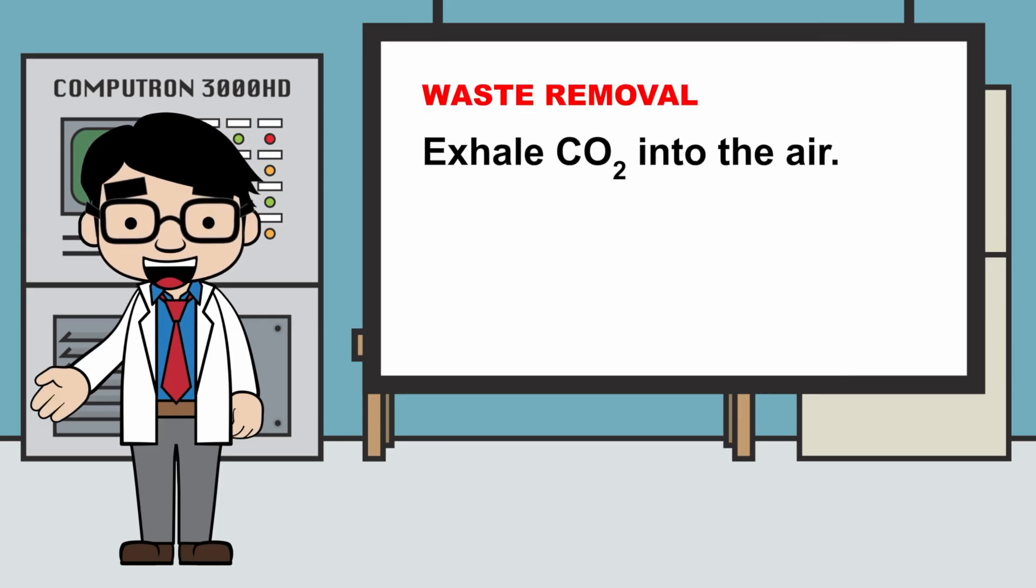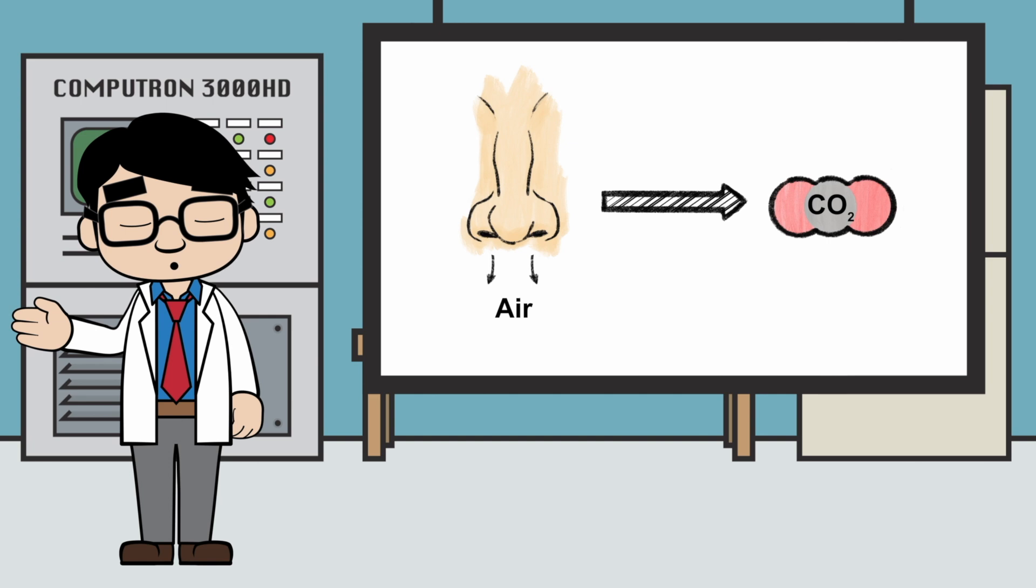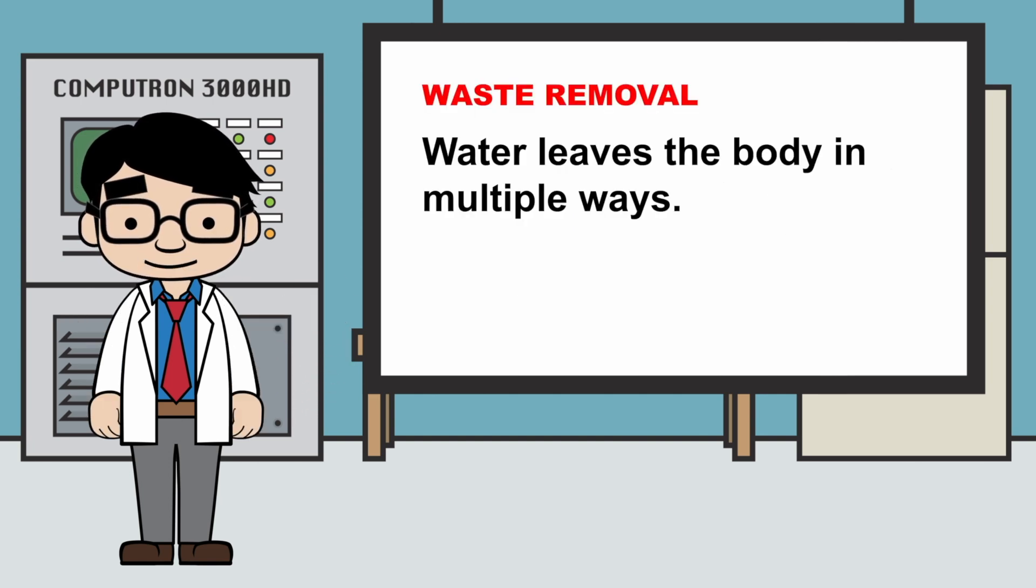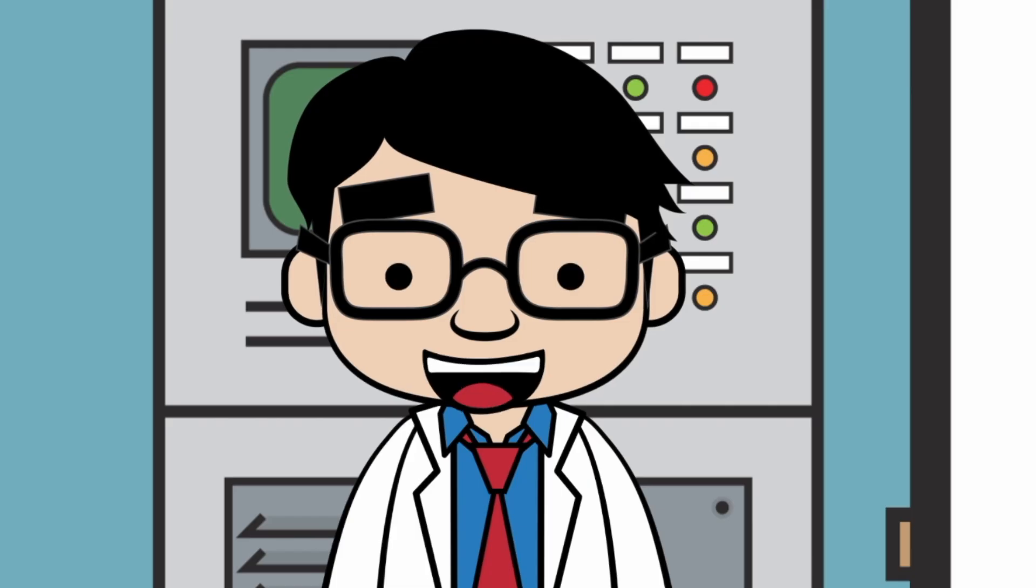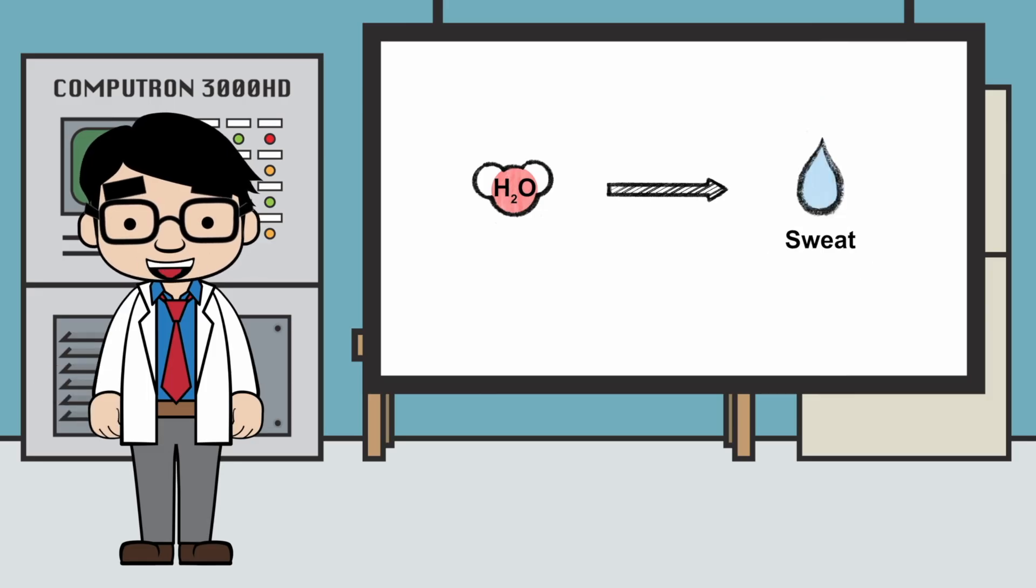We exhale carbon dioxide into the air. As we breathe out, CO2 leaves our body and mixes with the air. Water leaves the body in multiple ways. Water exits the body as urine. Water leaves the body as moisture in our breath. That's why our breath fogs up glass. And water leaves the body as sweat.